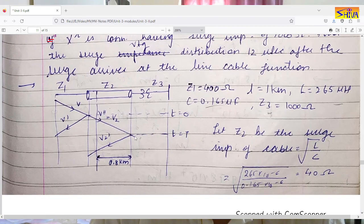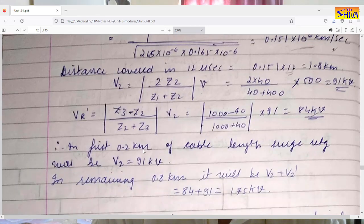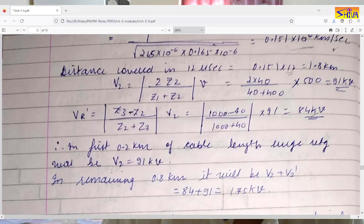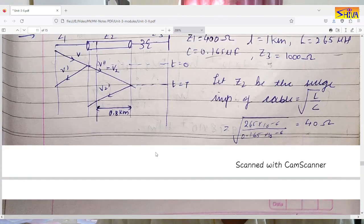The transmitted voltage V2 = 2Z2/(Z1 + Z2) × V = 91 kV. The reflected voltage at the transformer end is V2' = (Z3 − Z2)/(Z2 + Z3) × V2 = 84 kV. So in the first 0.2 km of cable the surge voltage is only 91 kV, while in the remaining 800 meters it is V2 + V2' = 91 + 84 = 175 kV. This is the surge voltage distribution in the cable after 12 microseconds.